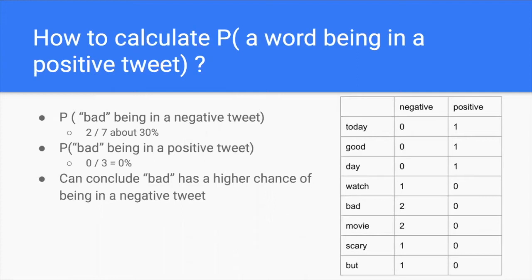So just by looking at the keyword 'bad', if a tweet only contains this keyword, it will have a higher chance of having negative sentiment. With tweets containing multiple keywords, you calculate the probability of each keyword being in a positive or negative tweet, then multiply them all together to get the total probability of the tweet being positive or negative.